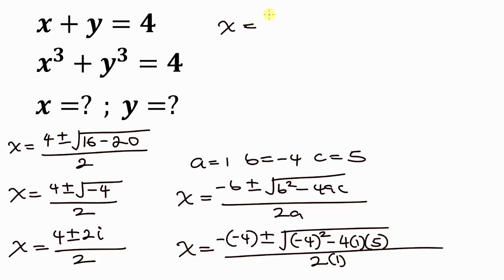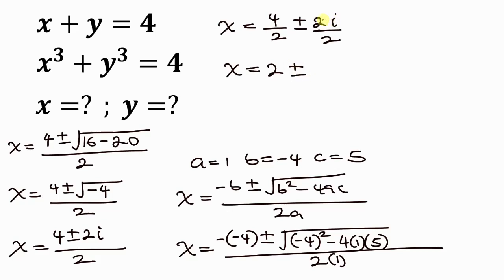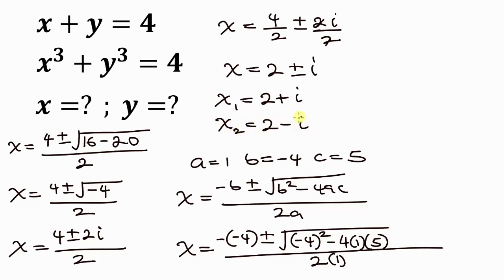Separating the terms: x equals 4 over 2 plus or minus 2i over 2, which simplifies to x equals 2 plus or minus i. So the two values of x are 2 plus i and 2 minus i.